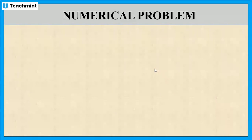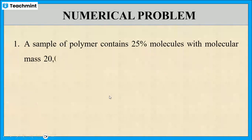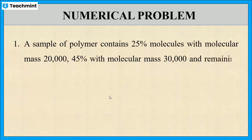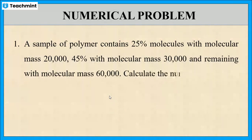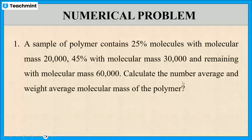Now let us solve a few numerical problems on the calculation of molecular weight of the polymer. Here is the first problem: a sample of polymer contains 25% molecules with molecular mass 20,000, 45% with molecular mass 30,000, and the remaining with molecular mass 60,000. Calculate the number average and the weight average molecular mass of the polymer.